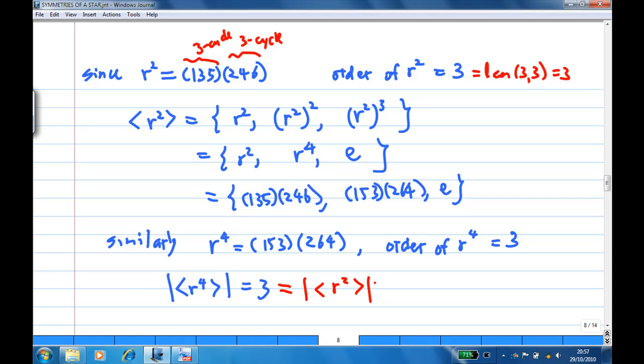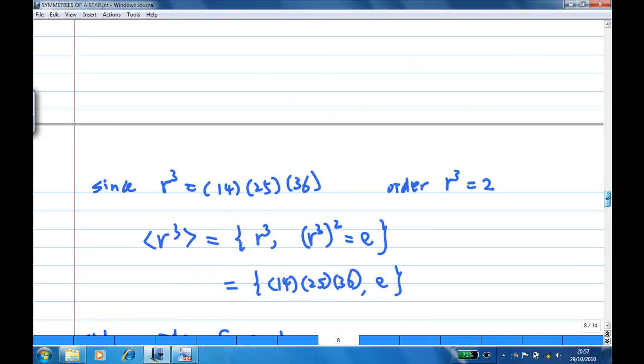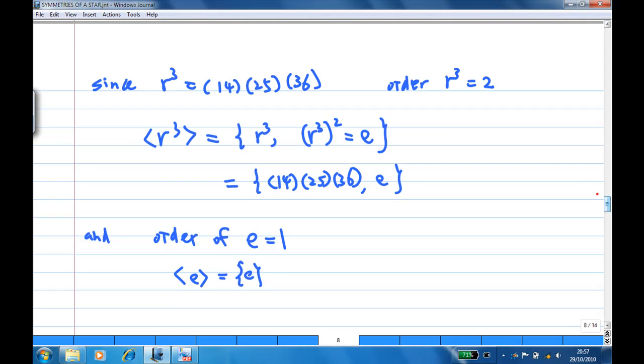Now, let's look at the cyclic subgroup generated by R^3. R^3 is the element (14)(25)(36). So, the order of R^3 is 2 since LCM(2,2,2) is 2. So, the cyclic subgroup generated by R^3 is R^3 and (R^3)^2 which is E. So we get (14)(25)(36) and E.